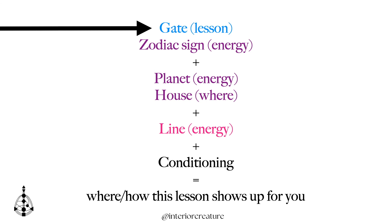I always encourage people to work on their big four first — especially your incarnation cross, your conscious sun — and then move into your conscious earth, your unconscious sun, and your unconscious earth. Those four are really going to help shape your understanding of the entirety of your human design chart. And if you're a juxtaposition cross, really, really understanding this incarnation cross and this specific gate is going to unlock the rest of your chart for you.